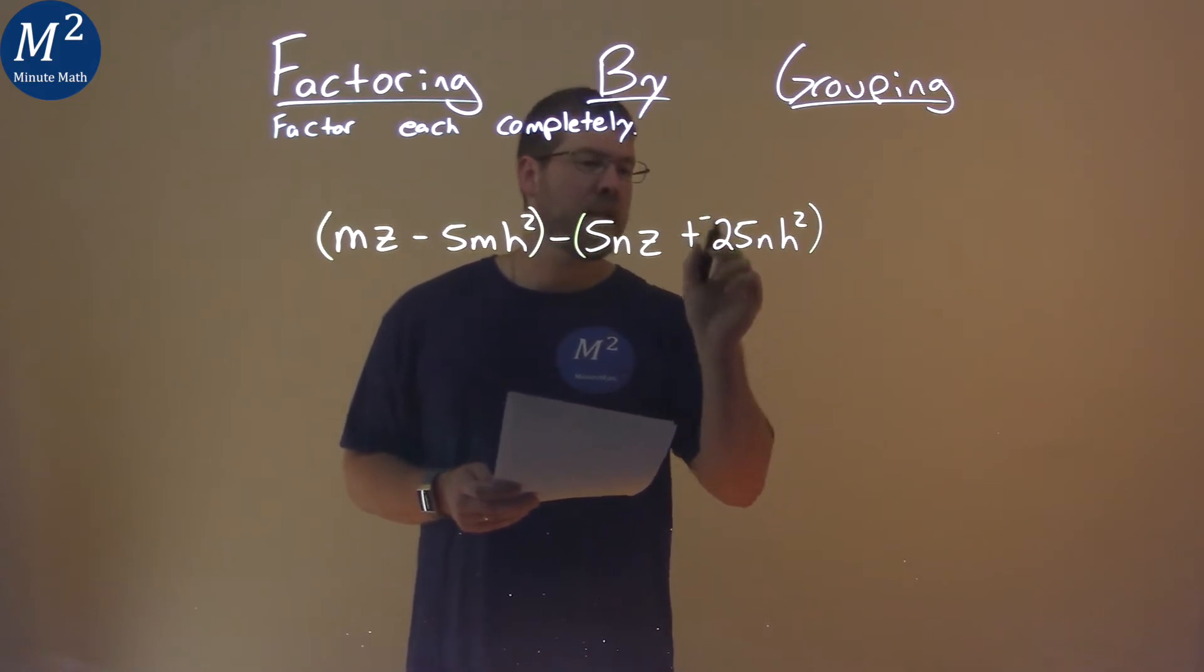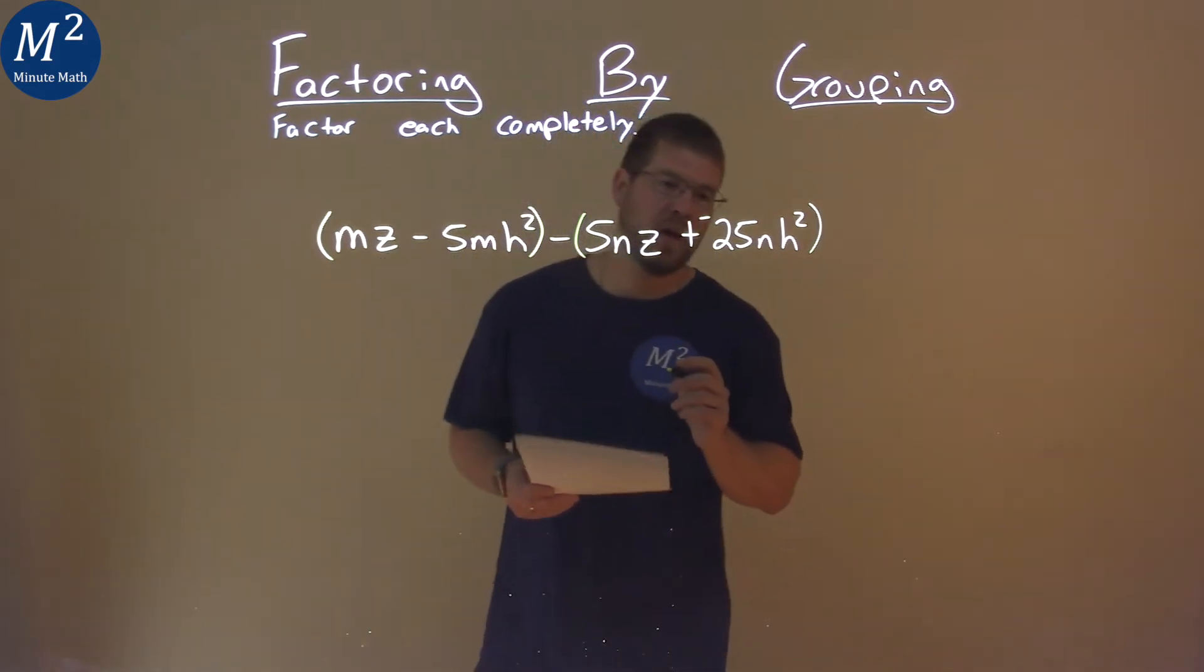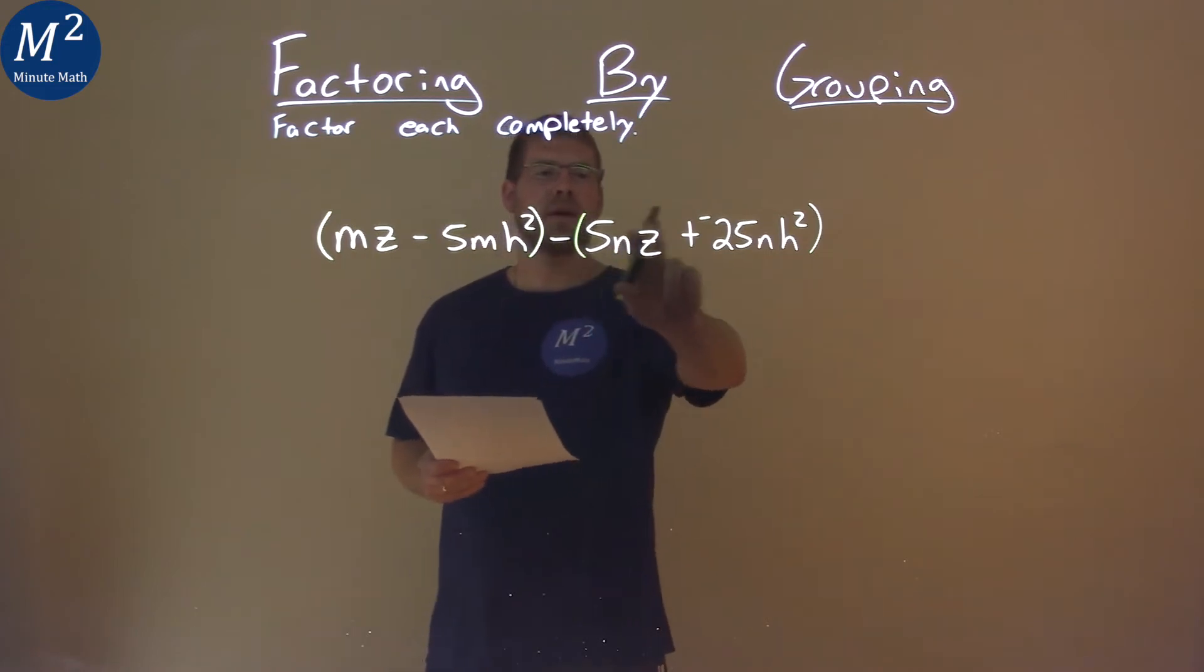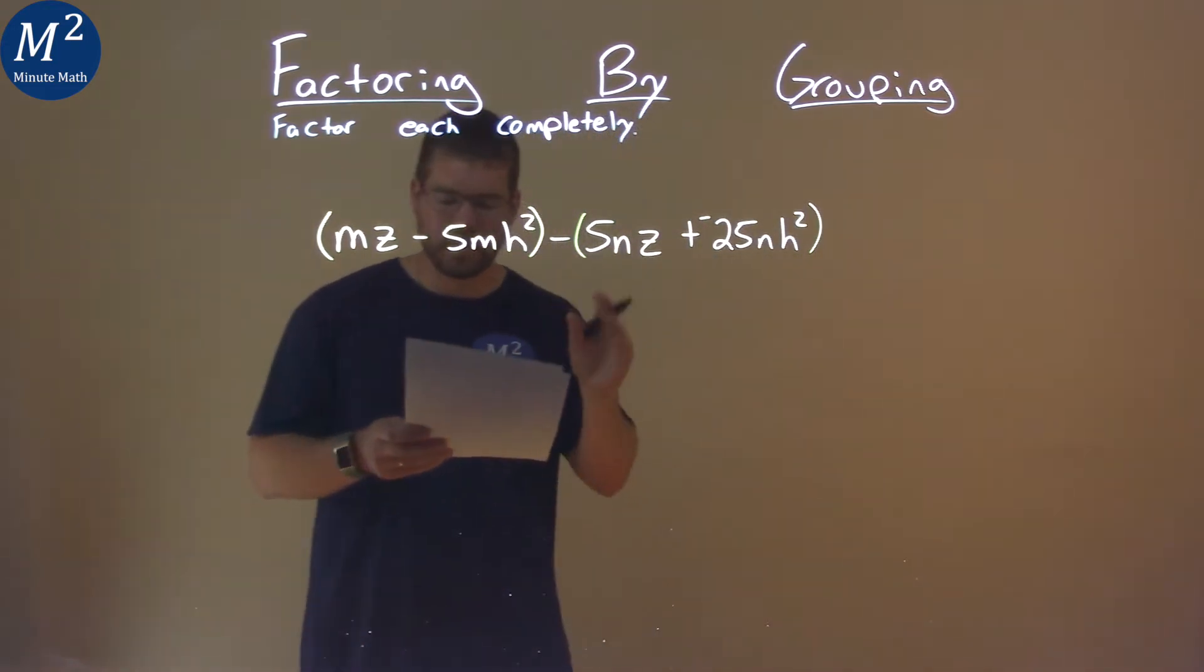That's an issue, but if I make it a negative right here, 25nh squared, when the minus sign gets distributed, it keeps it positive, so we're going to make sure we do that step.